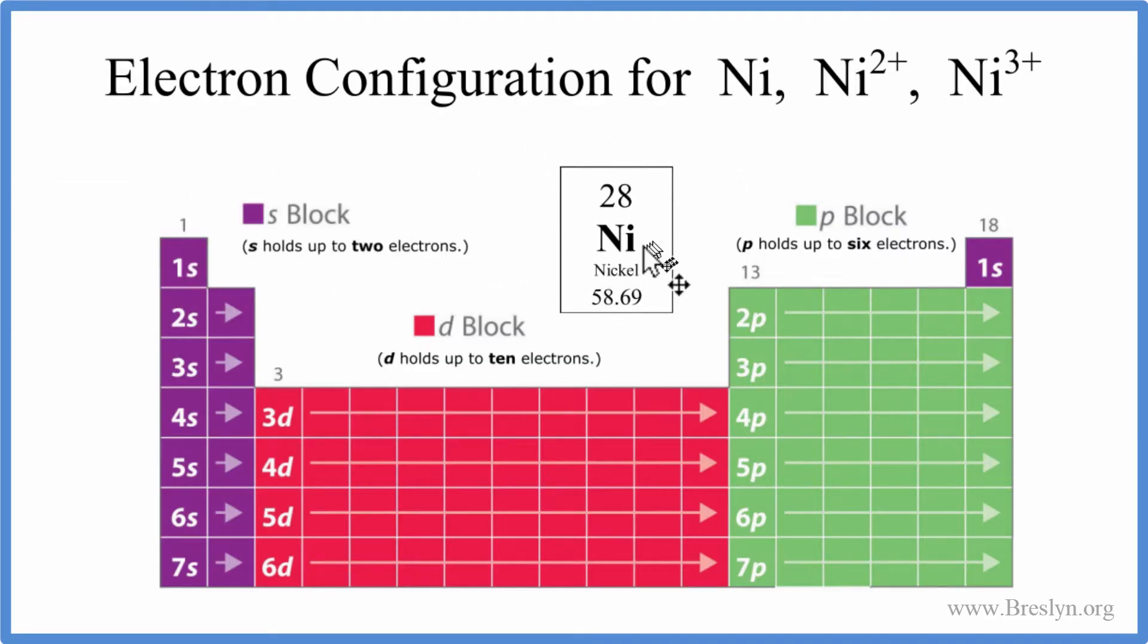We can see that its atomic number is 28, so that means it has 28 protons. That's the atomic number—atomic number equals protons. We also know this is a neutral element; it doesn't have the plus after it. So this is neutral nickel, which means the protons will equal electrons. We have 28 electrons to write the electron configuration here.